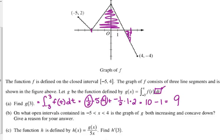So G of 3 is equal to 9. You get one point for the answer. On part B, on what open intervals contained between negative 5 and 4 is the graph of G both increasing and concave down? Give a reason for your answer.